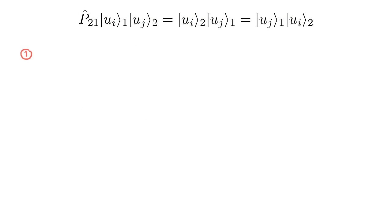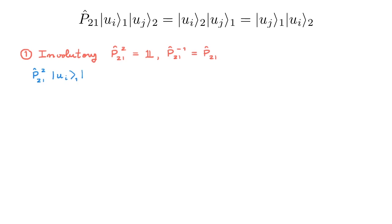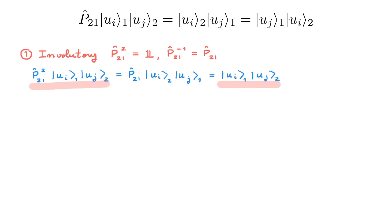The first property is that P21 is involutory. This means that it squares to the identity operator, or put another way, it is its own inverse. To see this, consider the action of P21 squared on a basis state. We apply the first P21 to exchange the particles once, and then we apply the second P21 to exchange the particles back. Comparing the result, we confirm that P21 squares to 1. In other words, exchanging two particles twice leaves us back where we started.